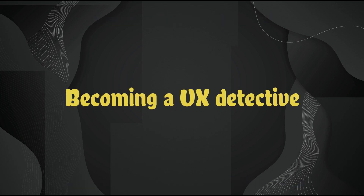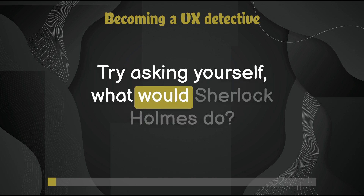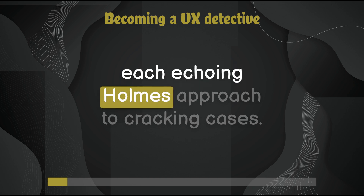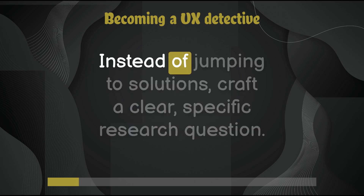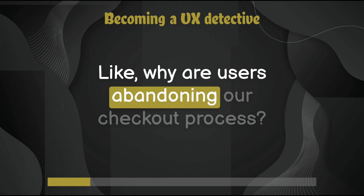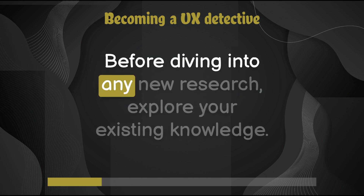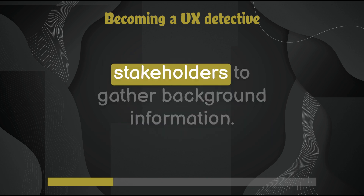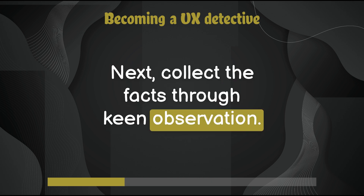Becoming a UX detective: stuck on a vexing UX question? Try asking yourself what Sherlock Holmes would do. Let's break UX detective work down into five steps, each echoing Holmes's approach to cracking cases. First, truly understand the problem — instead of jumping to solutions, craft a clear, specific research question, like 'Why are users abandoning our checkout process?' Write it down, complete with a question mark. Then explore your existing knowledge, conduct archival searches, and interview stakeholders to gather background information.